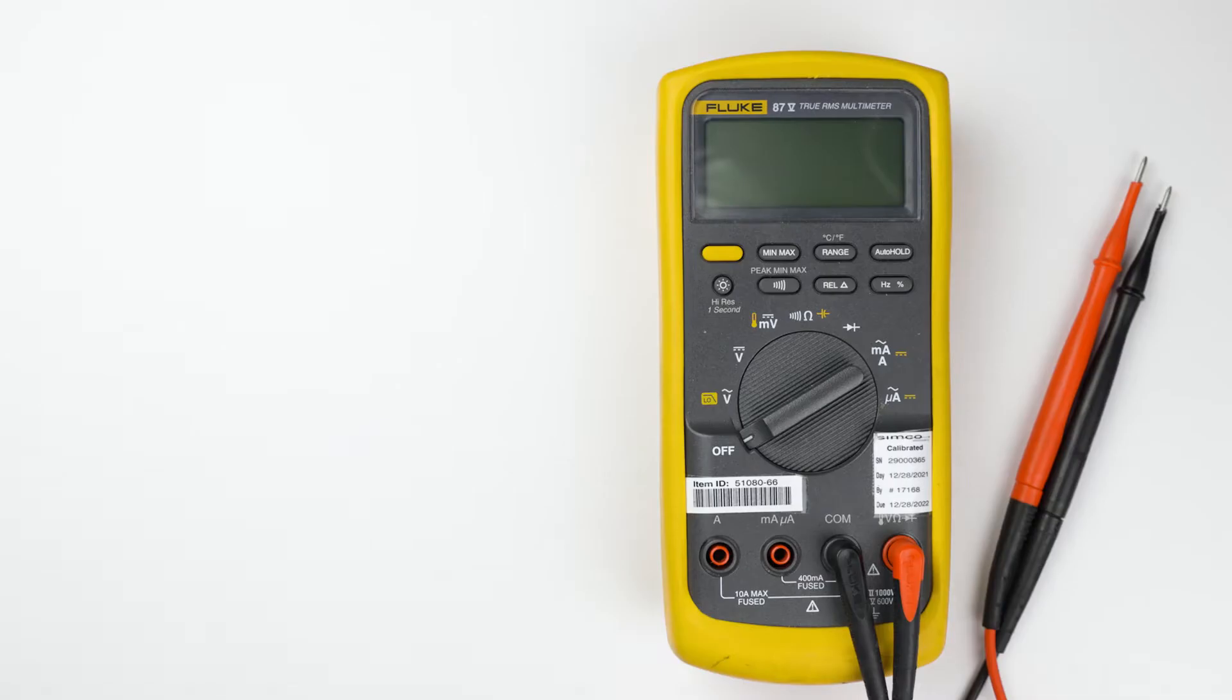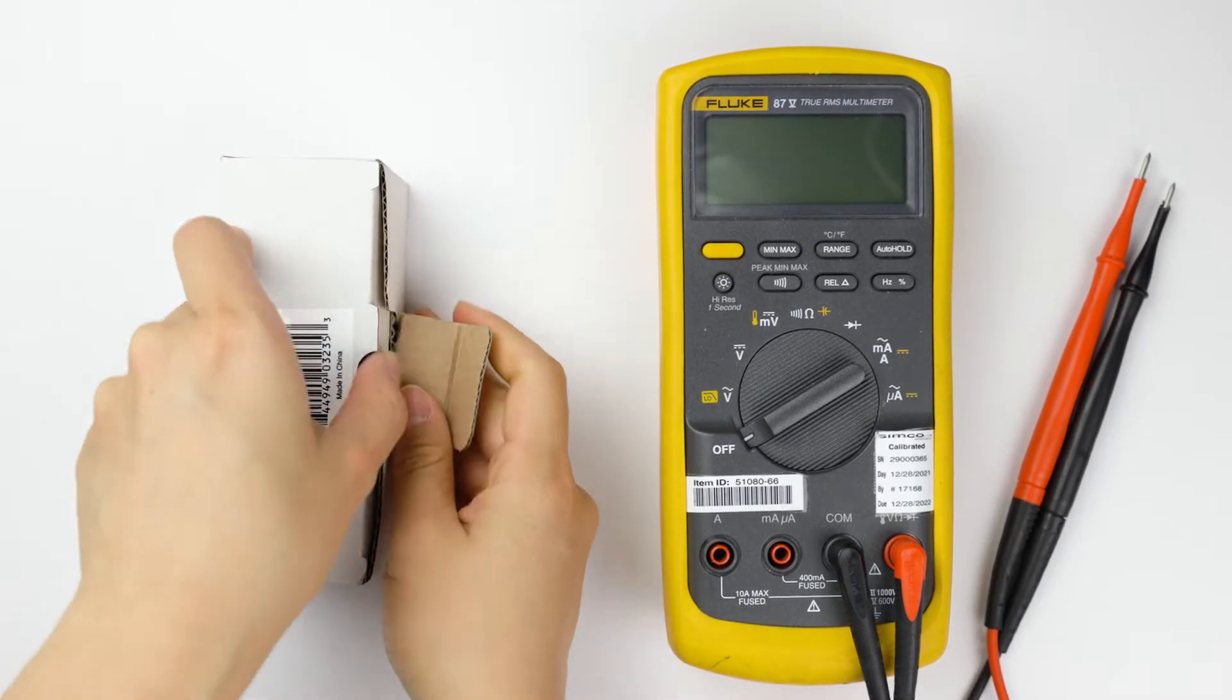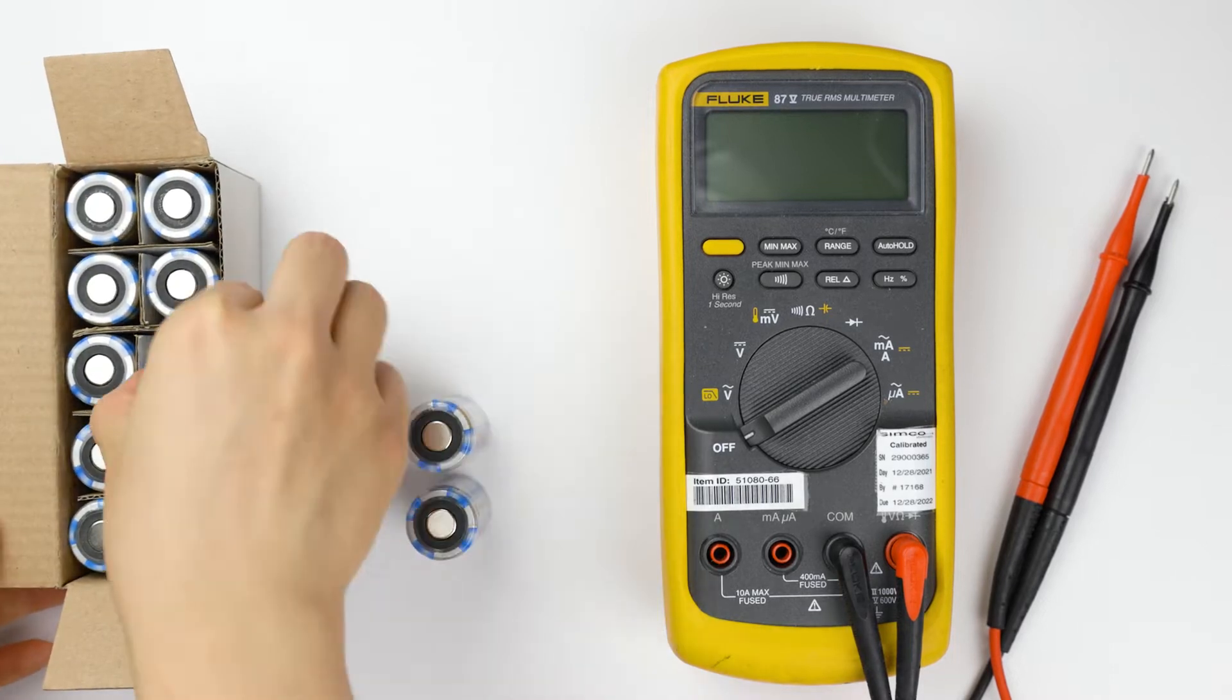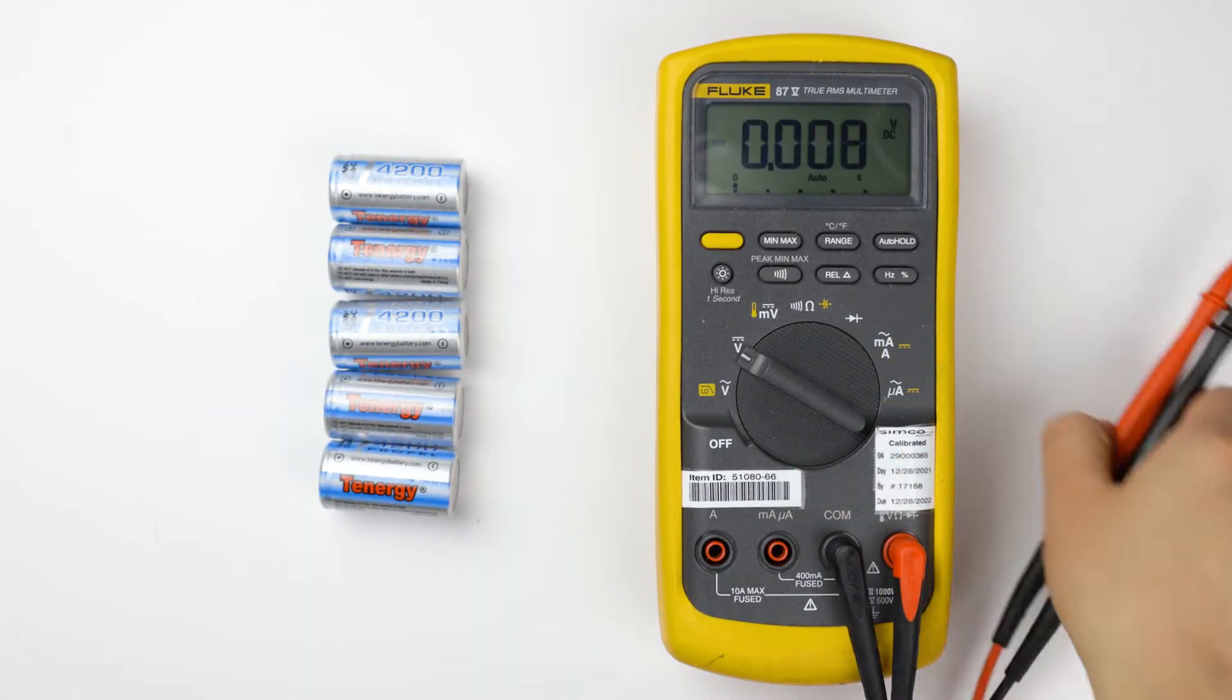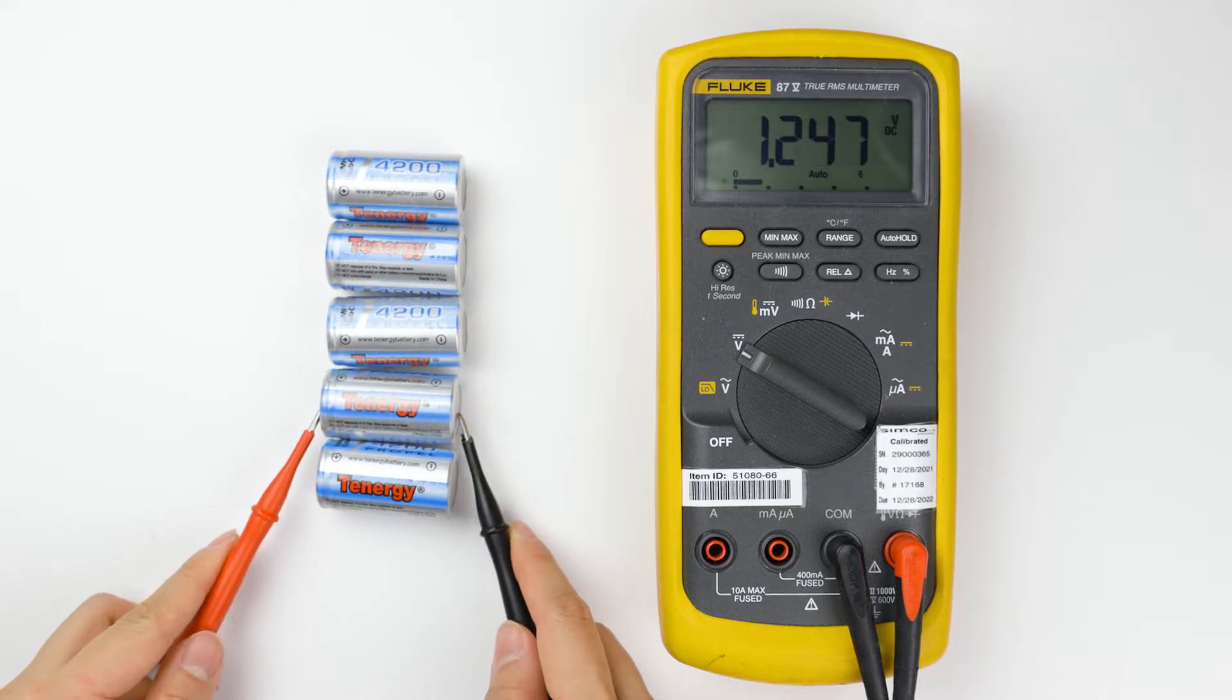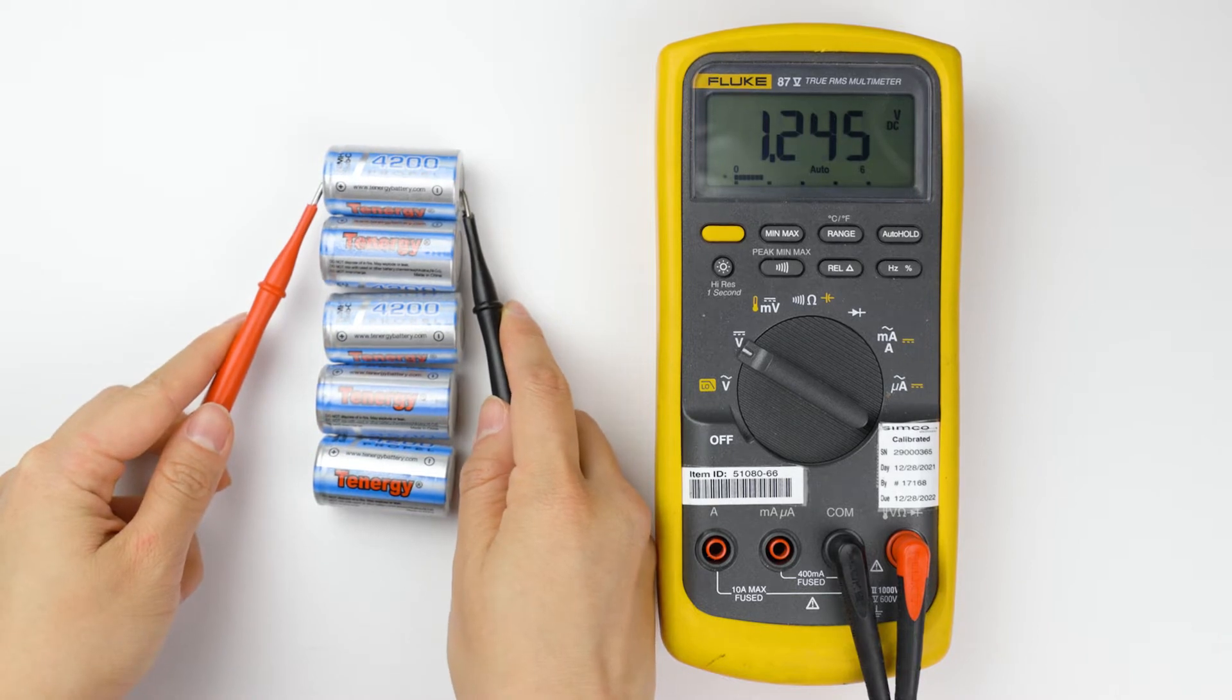We highly recommend using new batteries that are bought from the same brand with the same voltage, capacity, and chemistry. Our goal is to keep them at the same level since it directly affects the battery pack's performance. Another advantage of using new batteries is that they often come in the same batch, which means their voltage and internal resistance are very similar to each other already. In most cases, all you need to do is double check their voltage to make sure there isn't a defective one. Then you can start building the battery pack right away.